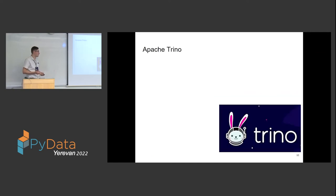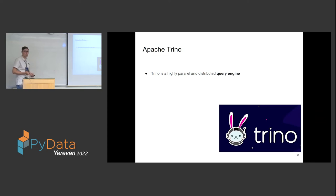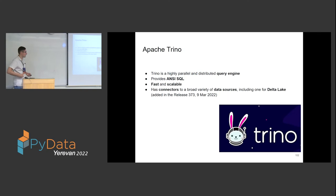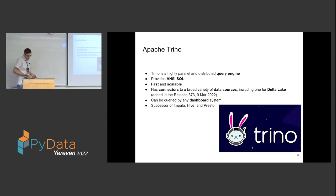There is such a framework called Trino, formerly known as Presto SQL. It is a highly parallel distributed query engine that provides ANSI SQL. It's very fast and scalable. It has connectors to a broad variety of data sources including Delta Lake, which was added just this year — something that was very much hoped for and expected. It can be queried by any dashboarding or visualization tool. If you know Impala, Hive, or Presto, you can think of Trino as essentially a successor of all those frameworks.